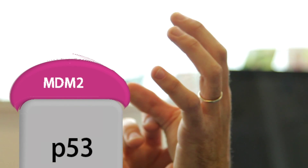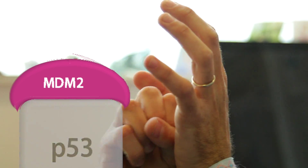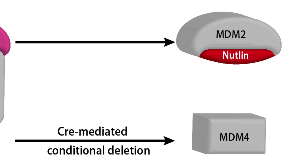When MDM2 is bound to P53, P53 levels are strongly reduced in the cell. When MDM4 is bound to P53, P53 cannot transactivate specific targets. When we delete MDM4 or block the MDM2-P53 interaction, P53 is free to activate a number of genes.